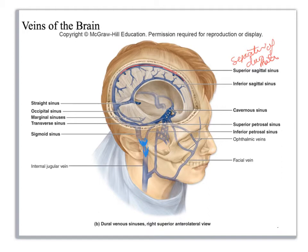That was the last of the slides for the upper body vessels. We will end here, and I believe we go on to unit five, the abdominal vessels.